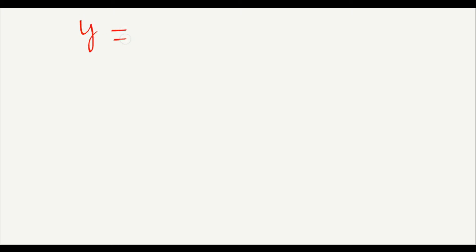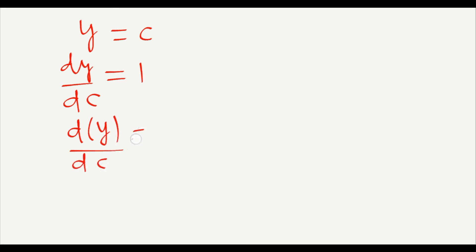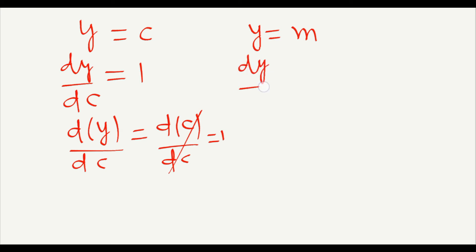Now when we take another variable, like y equals c, we can write dy upon dc. What is this differentiation? It should be one, because this is differentiation of y with respect to c, and since y equals c, we differentiate c with respect to c, which gives one. Another example: if y equals m, then differentiation of y with respect to m should also be one using the same logic.